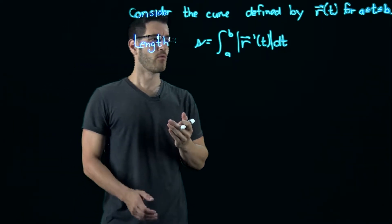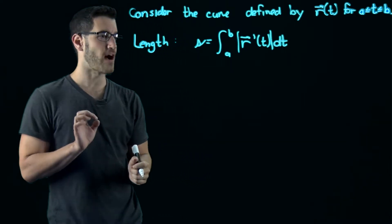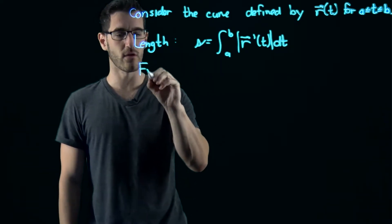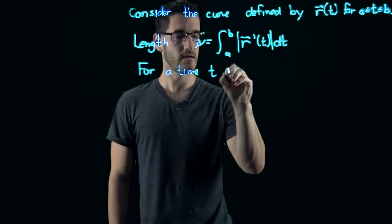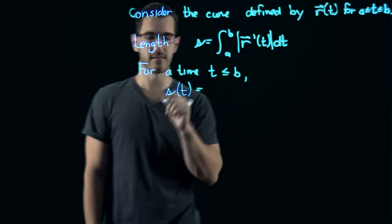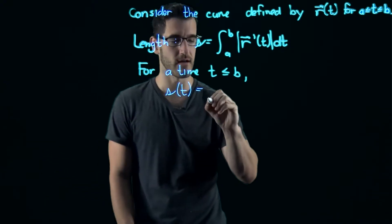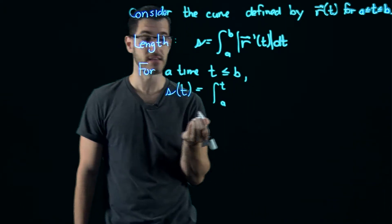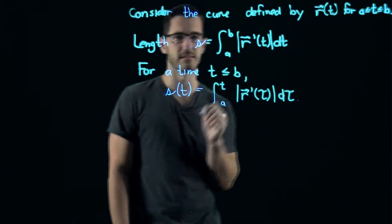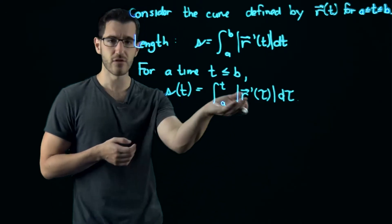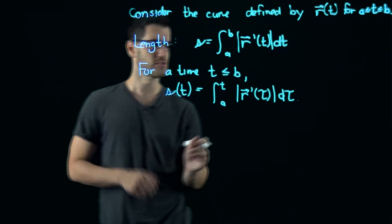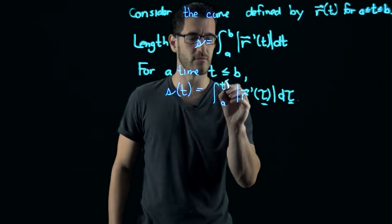What if we don't want the length of the whole curve? What if we only want to travel from time equals a to some other time t? We can say for a time t less than or equal to b, the distance traveled, which depends on time, is the integral starting at a up to that time t. To avoid a clash of notation, instead of using t inside the integral, I'm going to use tau. It doesn't actually matter because when we compute the antiderivative, we get a function in tau, and when we plug in t and a, we get a function of t back. We just choose tau so there's no confusion with the t in the limits.